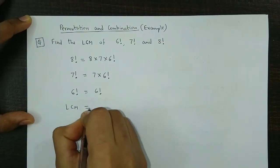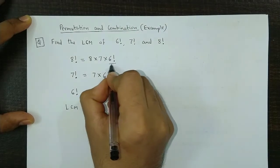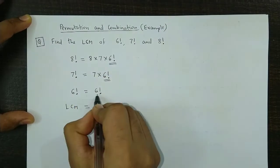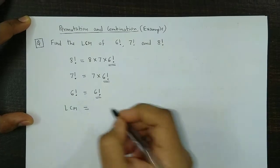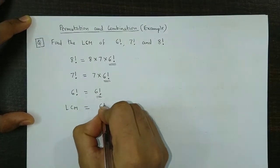The LCM would be, first we write down the common factors. The common factor here is 6 factorial. So we write 6 factorial.